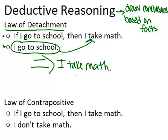So the symbolic representation of this would be, if P, then Q is true, and I know P is true, my overall conclusion is that Q has to also be true.